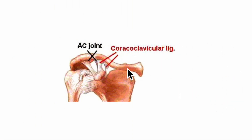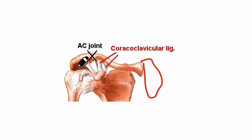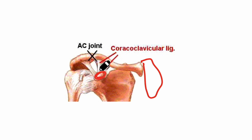In this diagram you can see the clavicle with its medial end attaching to the sternum and its lateral end near the shoulder blade and the coracoid process. The coracoclavicular ligament connects the coracoid process of the scapula and the clavicle. Group 2 fractures occur in the lateral third distal to the attachment of the coracoclavicular ligament — that means away from this ligament.